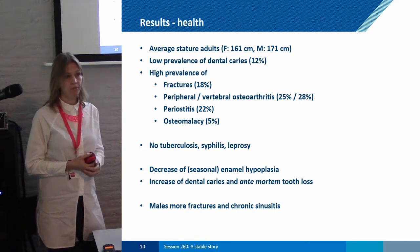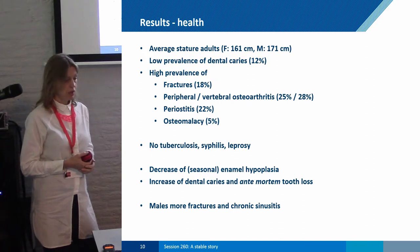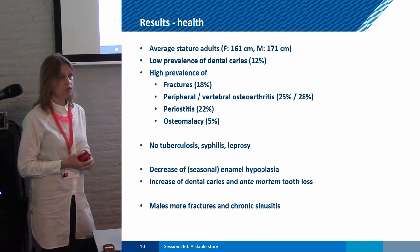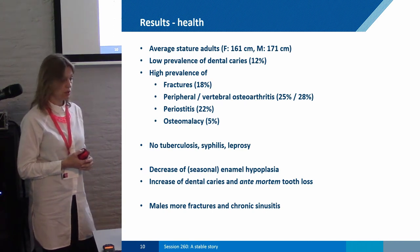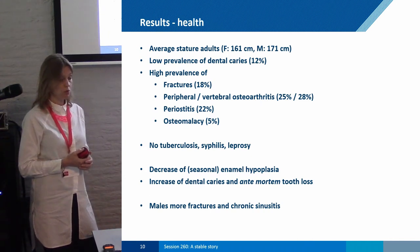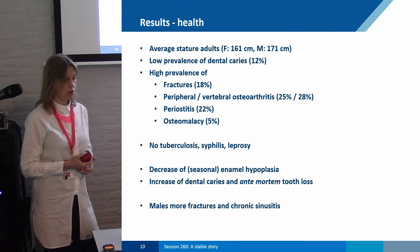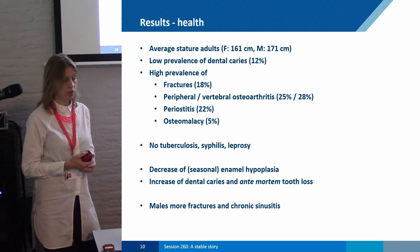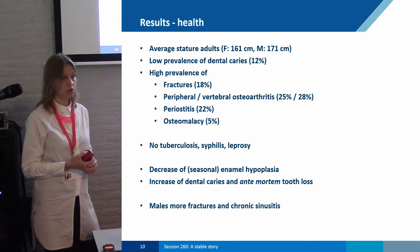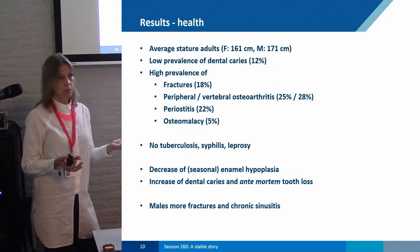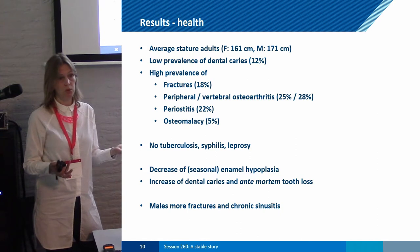Concerning health, the stature of females and males was quite average relative to reference populations. We saw a relatively low prevalence of caries, but relatively high prevalence of fractures, peripheral and vertebral osteoarthritis, periostitis, and osteomalacia. We didn't find any clear evidence of tuberculosis, syphilis, or leprosy, which is remarkable for such a large population. From a diachronic perspective, we saw a decrease of regular and seasonal enamel hypoplasia but an increase of dental caries and ante-mortem tooth loss, which may point to a change in diet over time. Males showed more fractures and more chronic sinusitis than females, possibly indicating harsher working or living conditions for males.